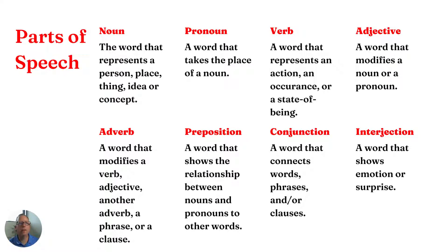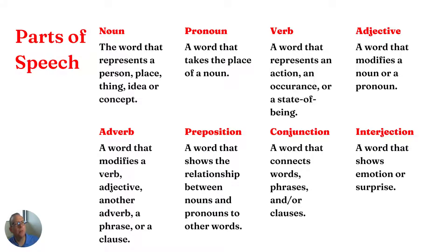Nouns are the words that represent a person, place, thing, idea, or concept in a sentence. Pronouns are like nouns — instead of having to repeat the name for that noun over and over again, you can use a pronoun in its place. Verbs: people generally think these are the actions, but they're a little more than that. An action word is a verb, but it can also be an occurrence, something that happened, or it could be a state of being. If you ask me how I am, 'am' is a state of being verb.